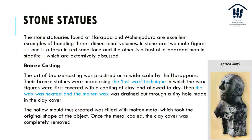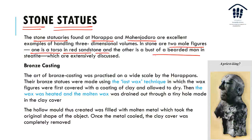Now, thinking about the architecture of the Indus Valley — what about the sculpturing? There are two types: stone statues and bronze. Stone statues were found in Harappa and Mohenjo-Daro and are excellent examples of three-dimensional volumes. In stone, there are two male figures: one torso in red sandstone, and another bust of a bearded man in steatite, which is extensively discussed — this is the so-called priest-king. A lot of people say it looks like Narendra Modi.